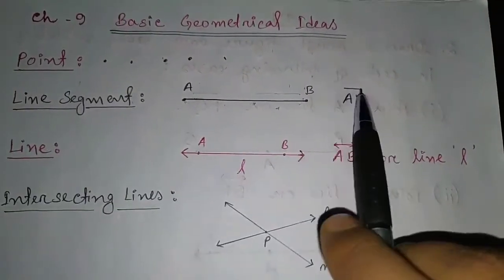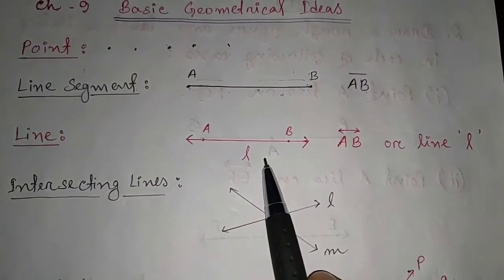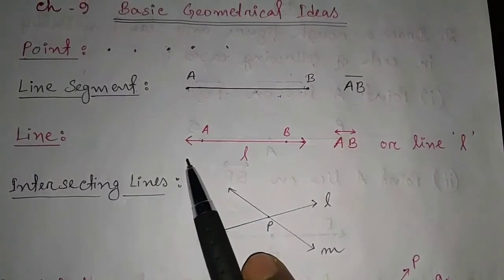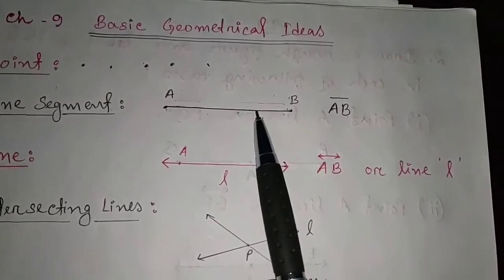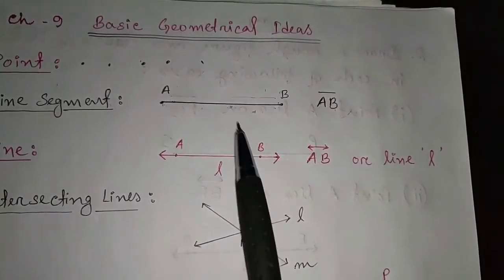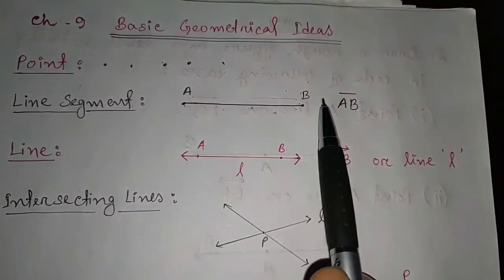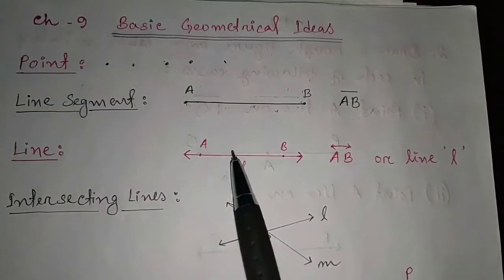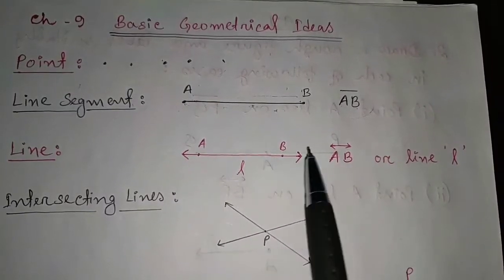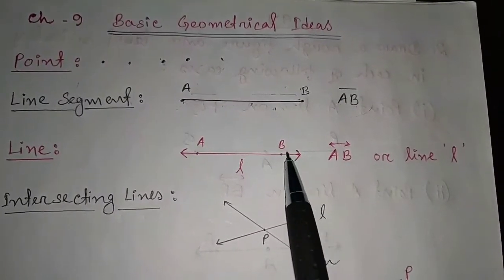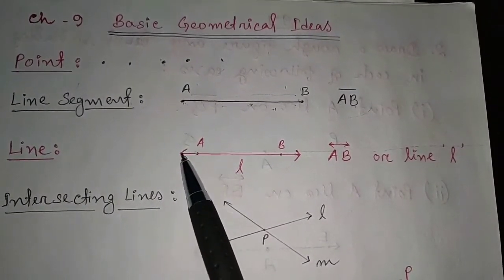Next is line. A line means when a line segment is extended in both directions endlessly, we get a line. The difference between a line segment and a line: in a line segment, the line ends at point A and point B. But in a line, you can see the arrow at both ends — the arrow means it can go up to infinity in both directions.